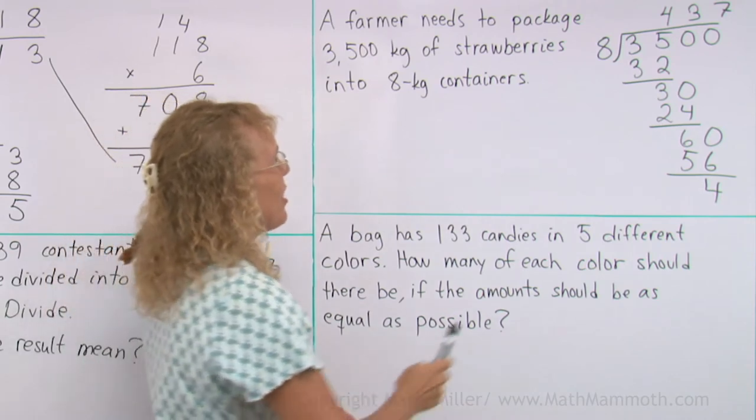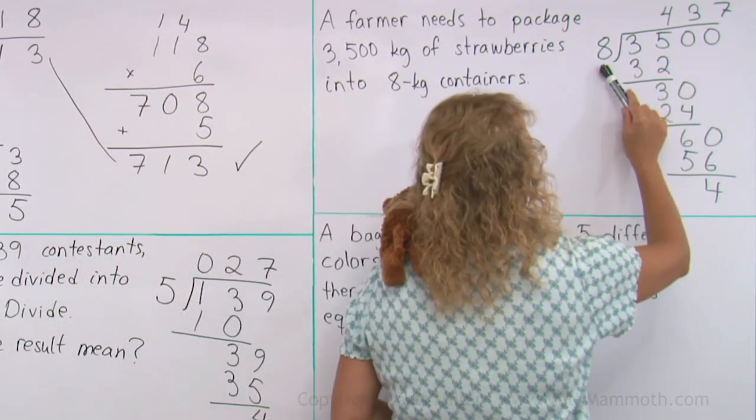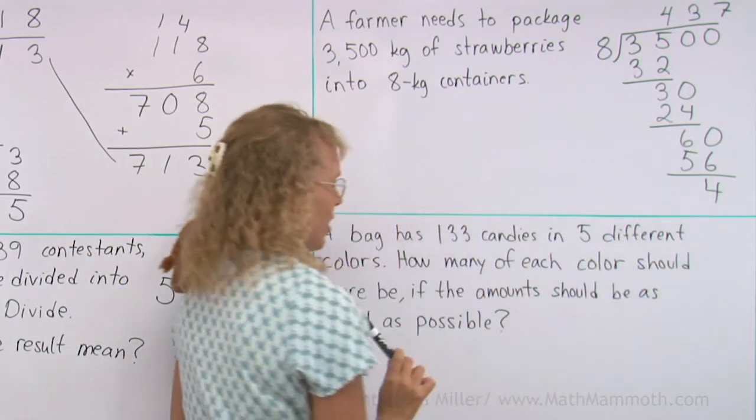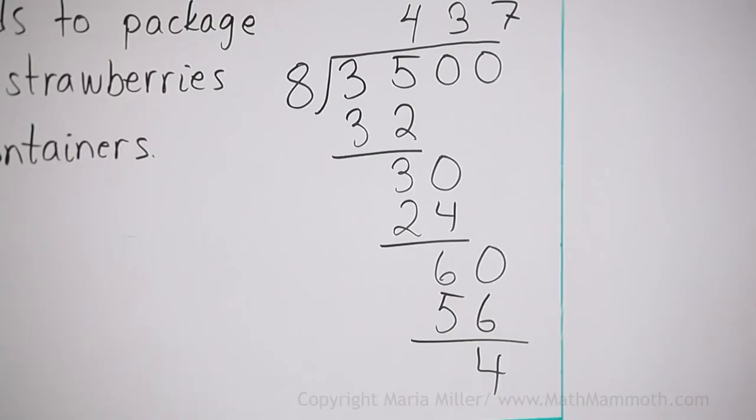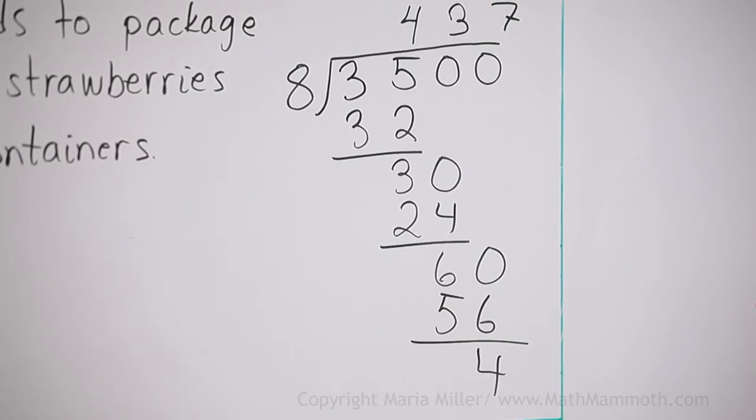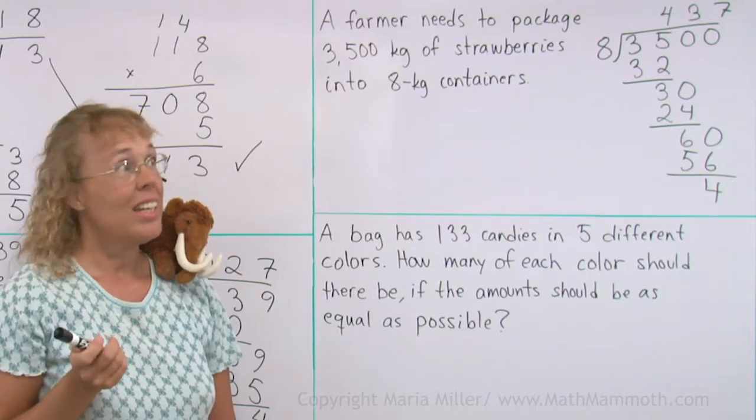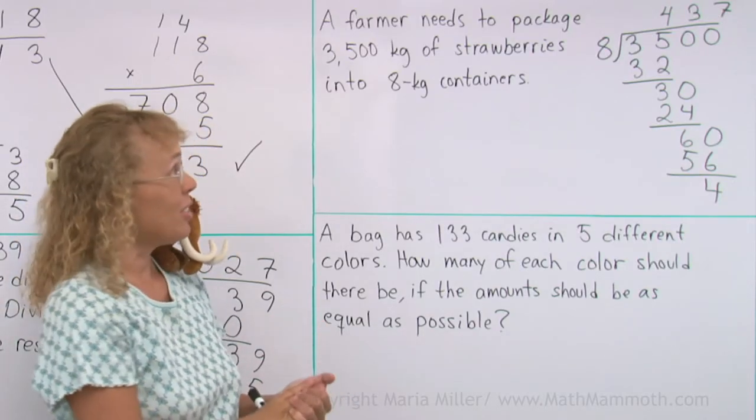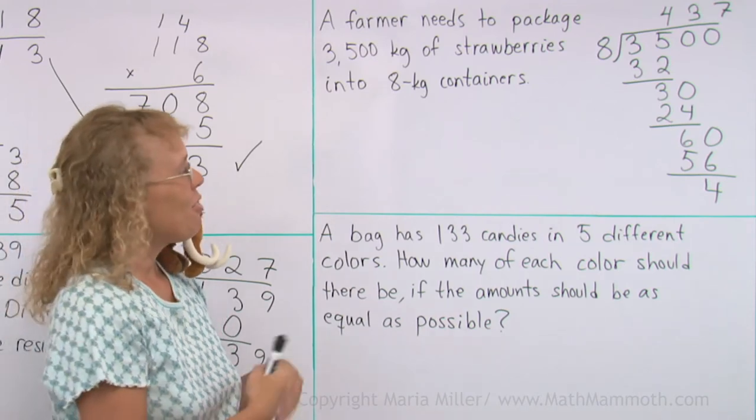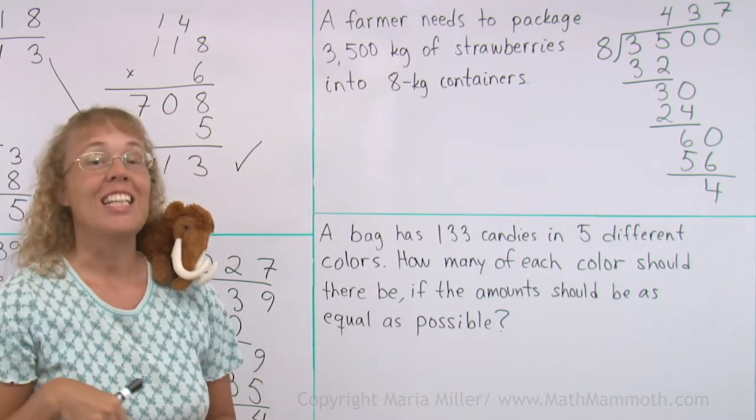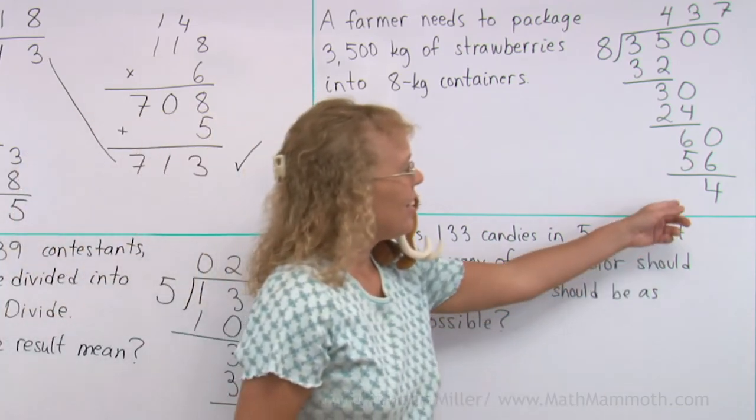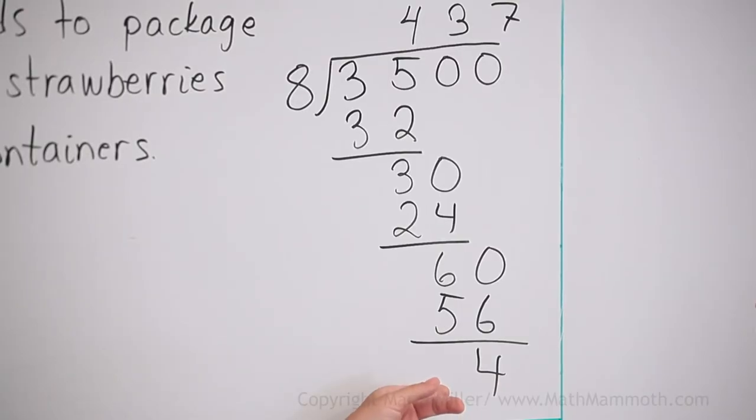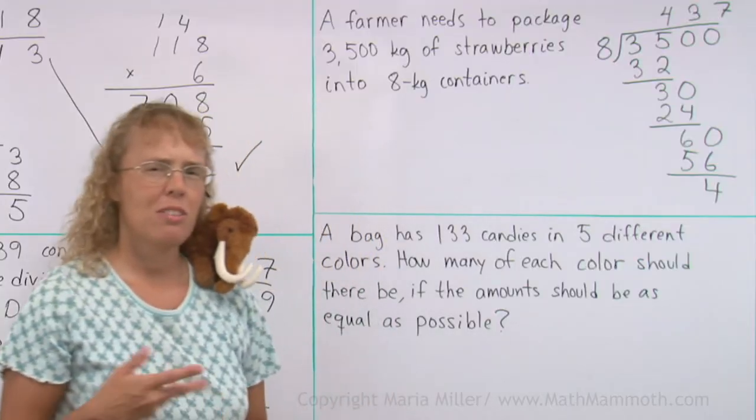We have this many kilograms of strawberries. The remainder is also kilograms. It is 4 kilograms of strawberries that are left over. And this number here, what does it mean? 437. It's the number of containers. So the farmer gets 437 containers of 8 kilograms each. And then he also has 4 kilograms of strawberries left over. So what does he do with them?